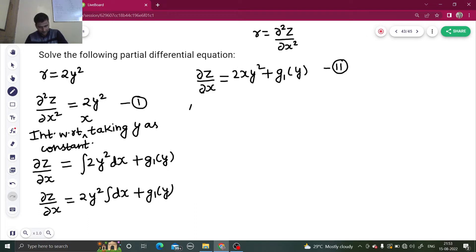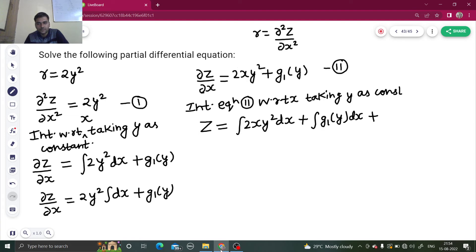Again, integrate equation number 2 with respect to x taking y as constant. So we will get z finally equals to integral 2xy squared dx plus integral g1y dx plus g2y. The constant of integration will come in terms of y. Let's name that g2y.